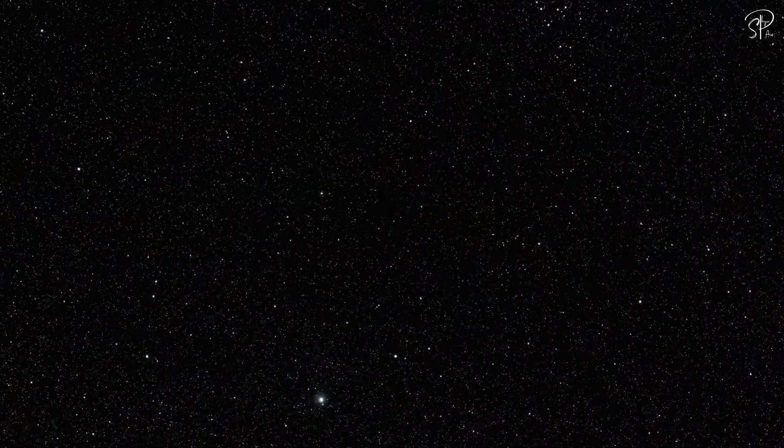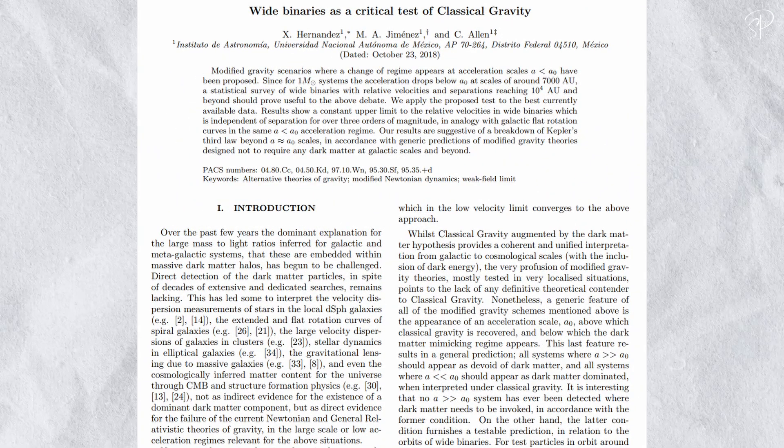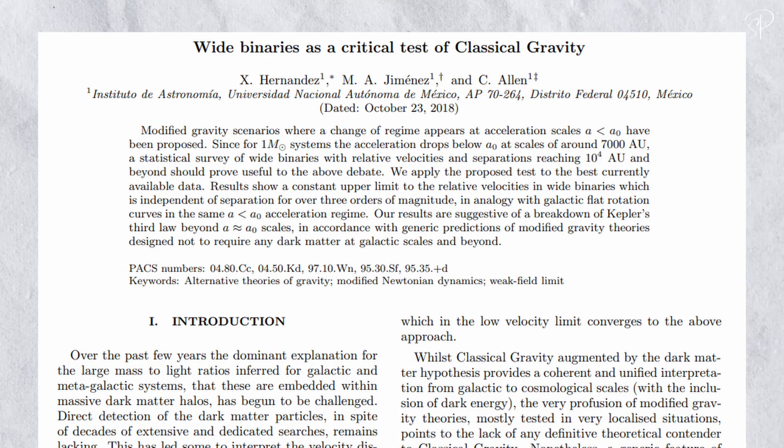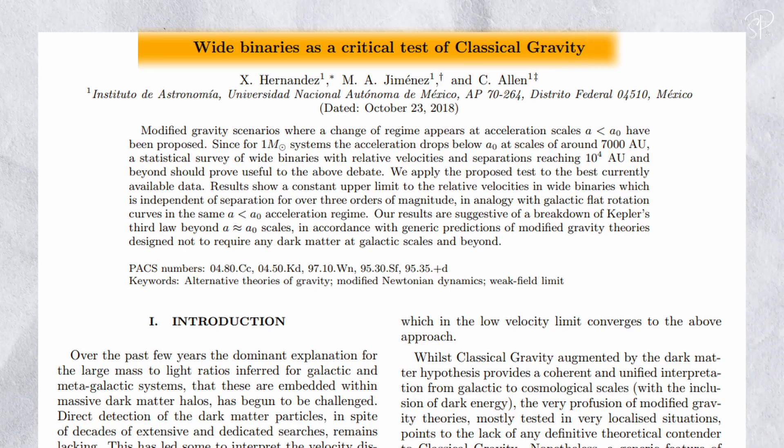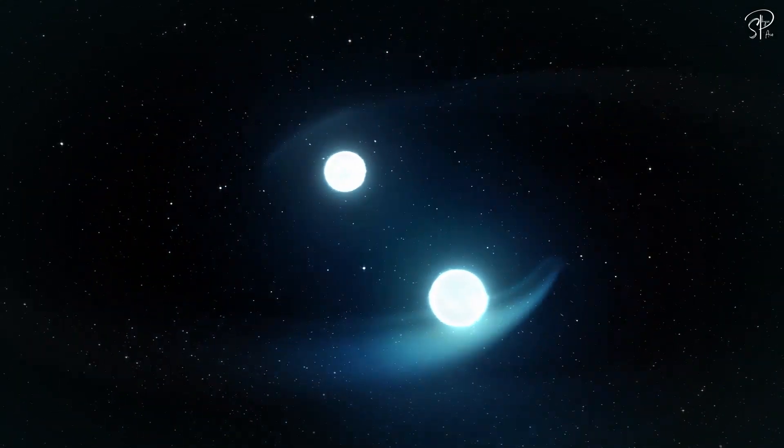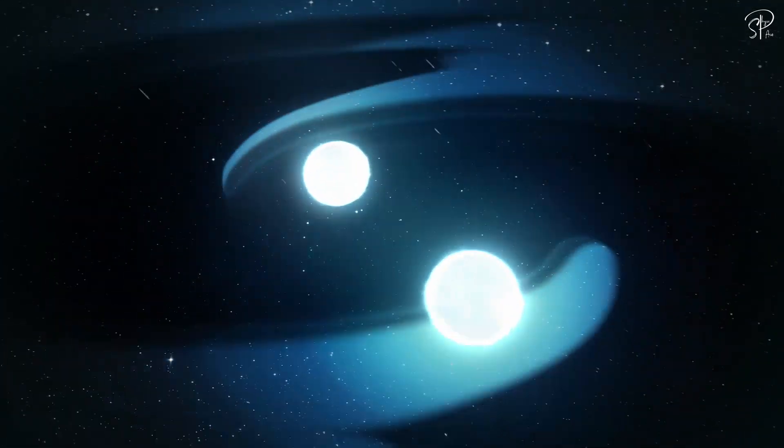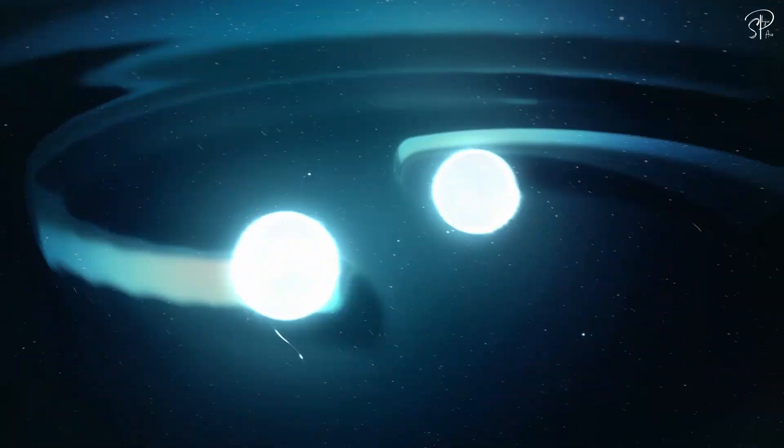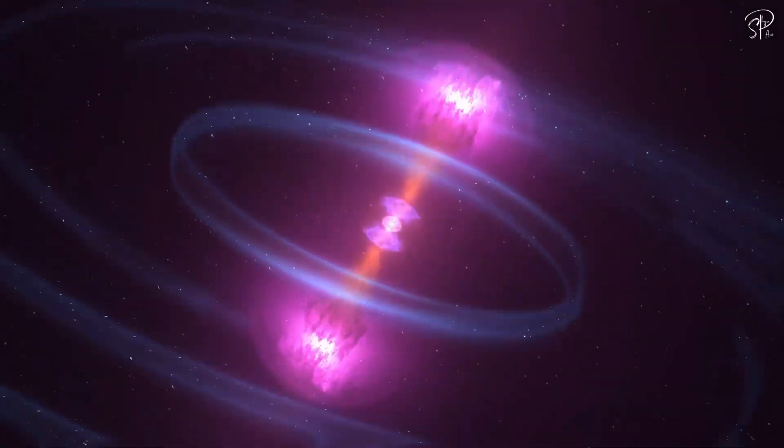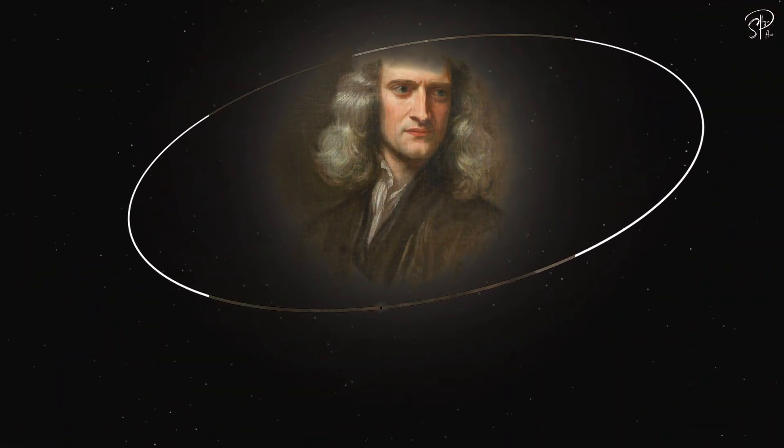Alright, moving on to the nitty-gritty of testing MOND. Back in 2012, Hernandez, Jimenez, and Allen proposed a novel way to put MOND to the test. They suggested observing binary star systems in the Milky Way. These binary stars would need to orbit each other at a specific distance, roughly around 10 light years, to enter a regime where MOND's equations would differ from general relativity, which reduces to Newtonian equations in this scenario.